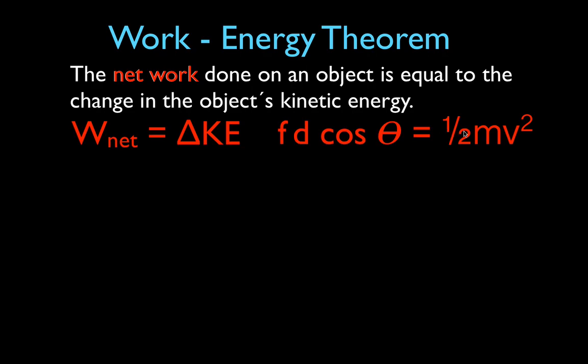The most common way you'll use this is when you're given a mass and velocity and asked for the amount of work done. You might think work is Fd cosine theta, but if you haven't been given a force or a distance, you can calculate the change in kinetic energy to find the work, because they're equal. You can also use this to calculate the change in velocity given the amount of work, force, and distance.